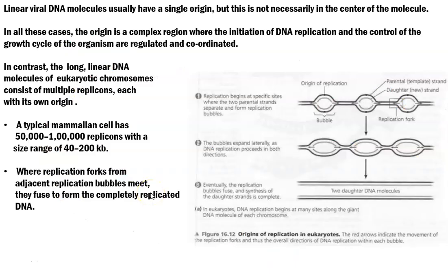Next we look at how certain linear nucleic acid molecules are synthesized. Linear viral DNA molecules usually have a single origin of replication; however, that origin may not necessarily be present at the center of the molecule, as seen in bacterial bidirectional replication. In eukaryotes and other organisms with linear DNA molecules, the origin is a complex region where initiation of DNA replication and control of the growth cycle are regulated and tightly coordinated.